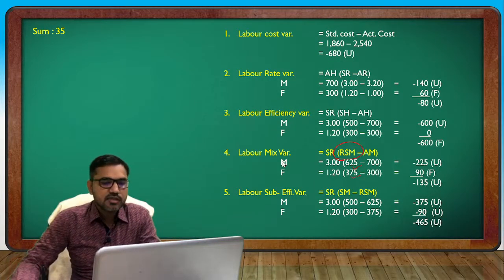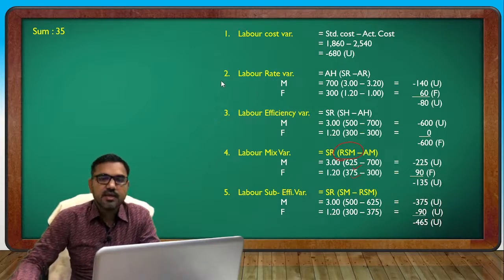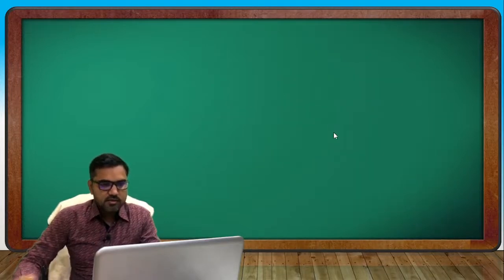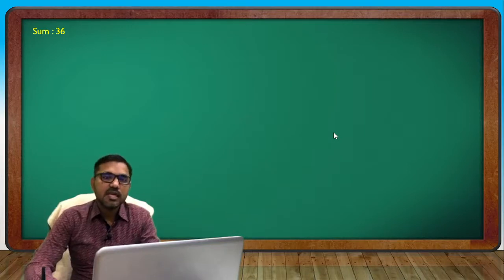Results: minus 465, minus 135, 680, and 680. Okay, next question number 36.